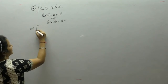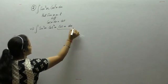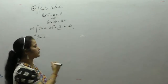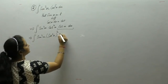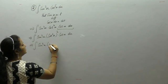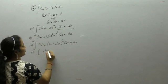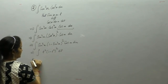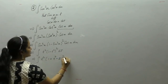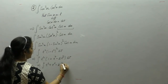We write cos⁵x as cos⁴x · cos x. With cos x dx = dt, we replace cos⁴x = (cos²x)² = (1 − sin²x)². In place of cos²x, we use the identity 1 − sin²x. Putting sin x = t and expanding (1 − t²)² using (a − b)² = a² + b² − 2ab, we get t² + t⁶ − 2t⁴ inside the integral.